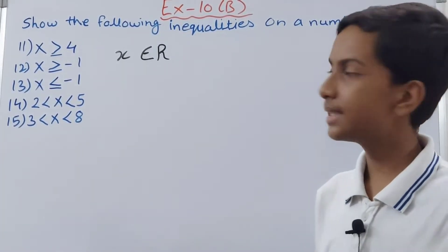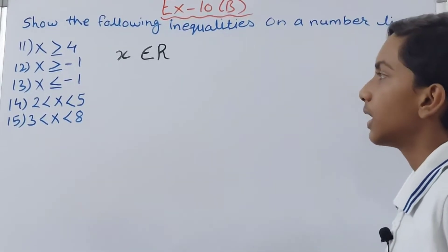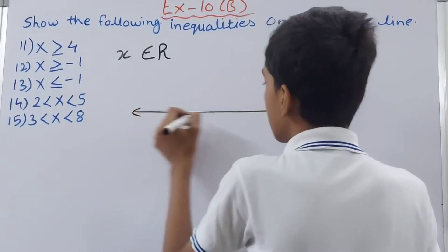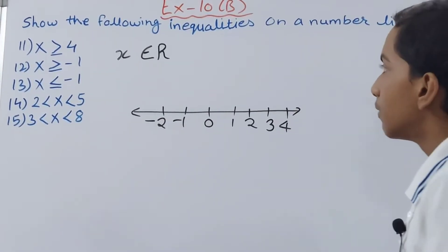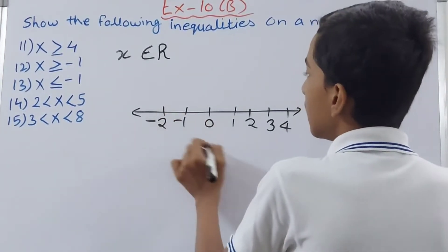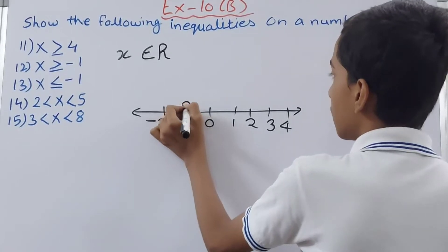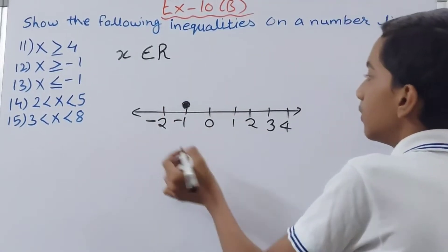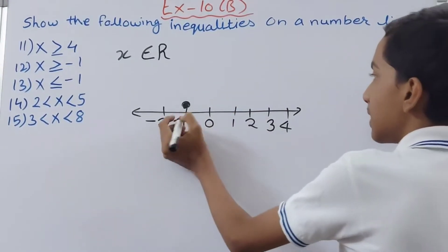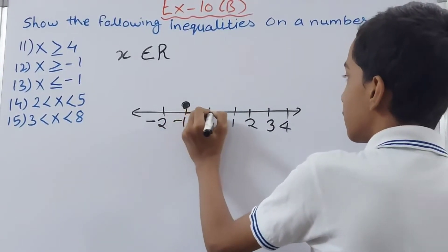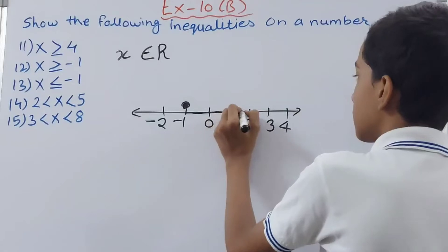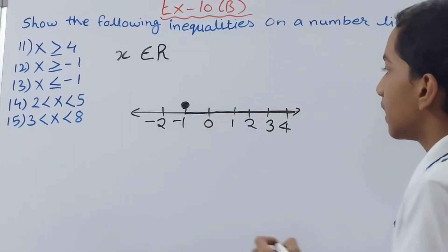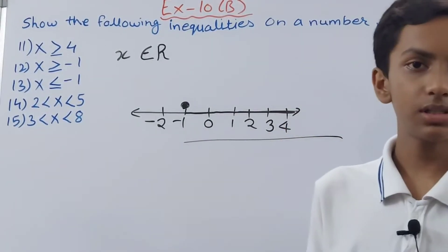Now we move on to the next inequality: x is greater than or equal to minus 1. We take the number line first. We have minus 1 on it, so we draw a shaded circle here. Then we highlight the portion having values more than minus 1 — this much part has a value more than minus 1. This is how we have represented the second inequality.